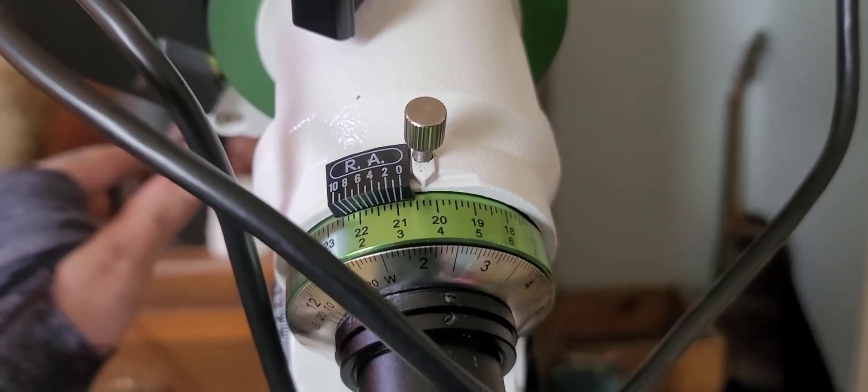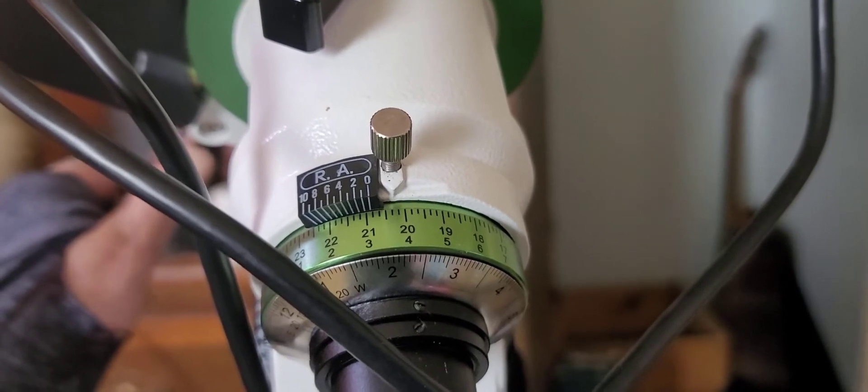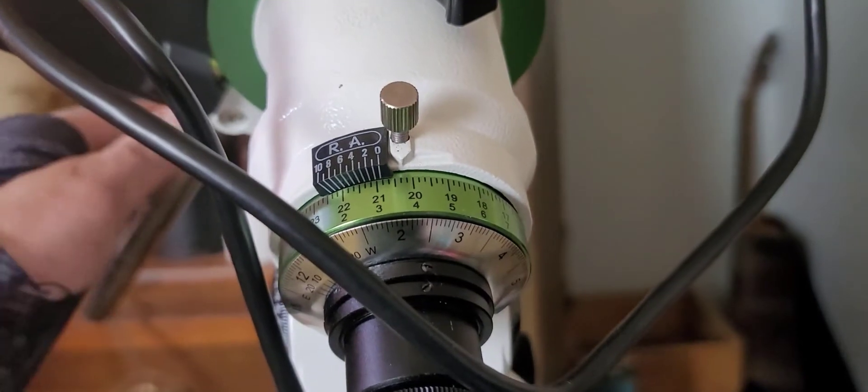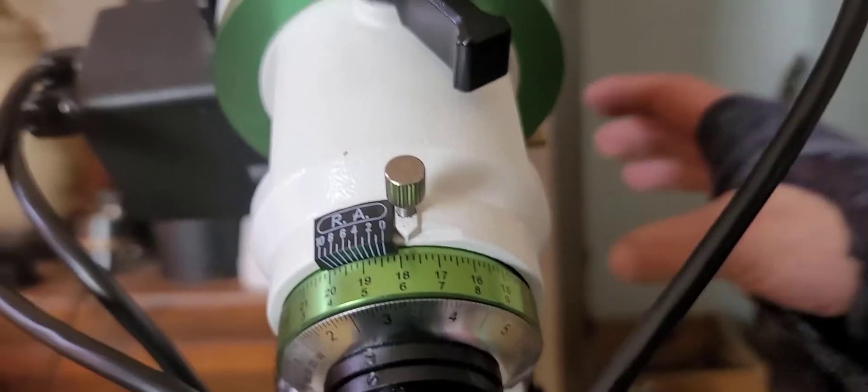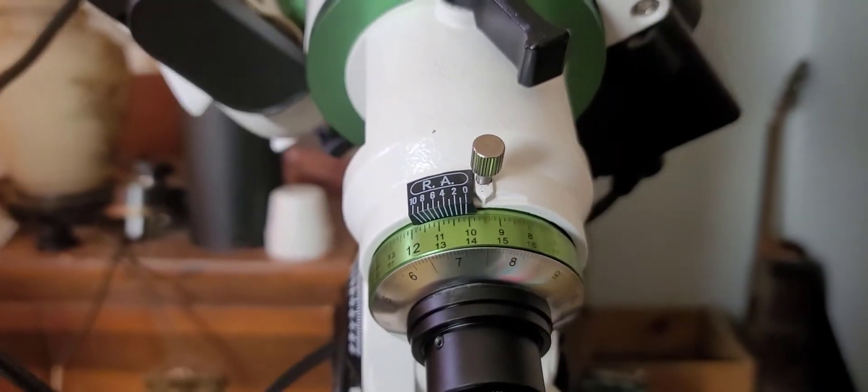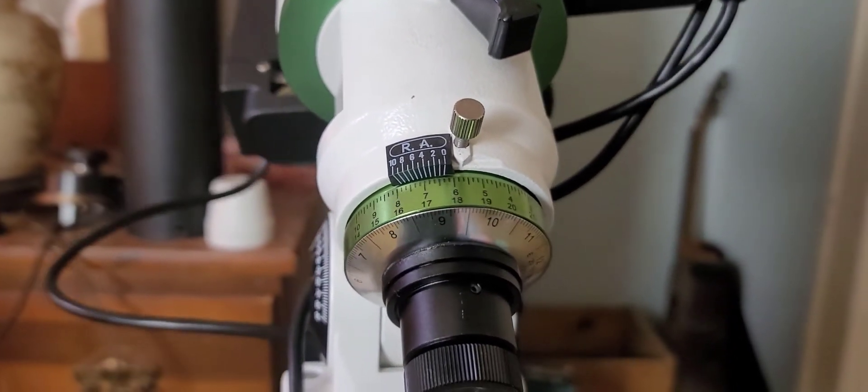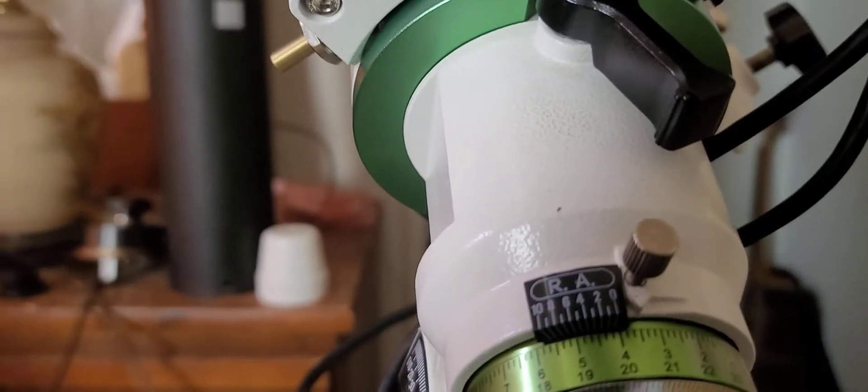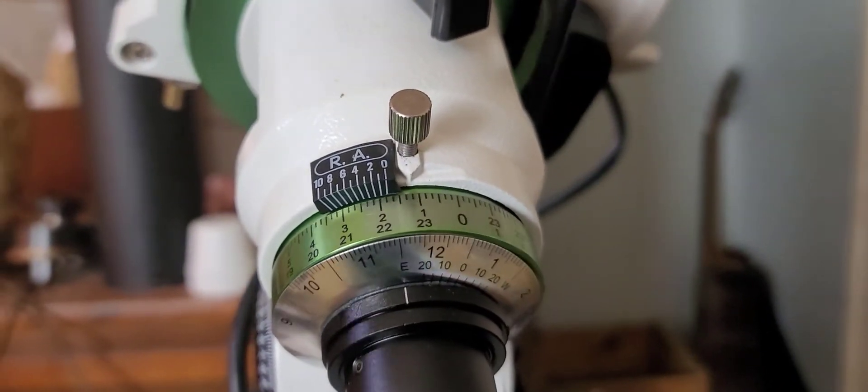And now you're going to move this. It said 20 hours and 20 minutes. So you move this in your RA. You loosen your clutch and you're going to move this all the way back until it reads zero. Now you can see why you don't want to do this with the scope or the counterweight on. Okay, you're going to bring that on around, all the way around until it says zero.